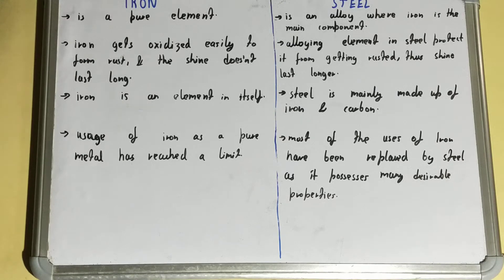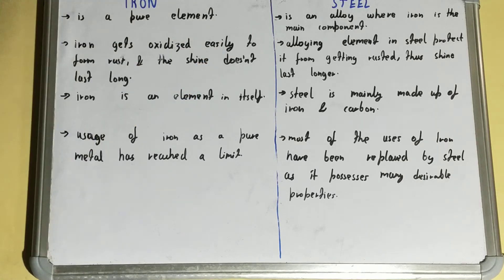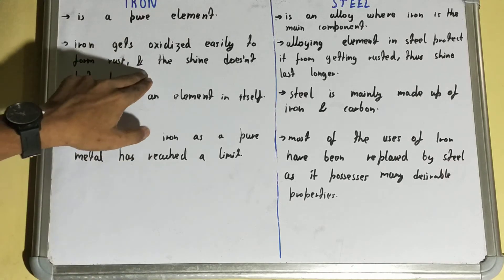Next thing, if we talk about iron, then iron has a big problem called rusting. Iron gets oxidized easily to form rust in the presence of moisture.